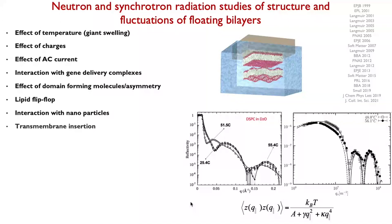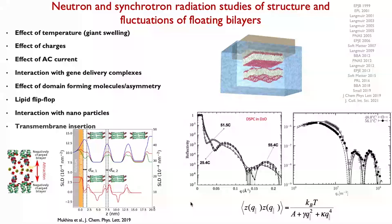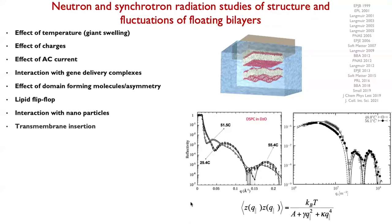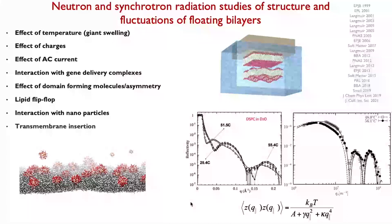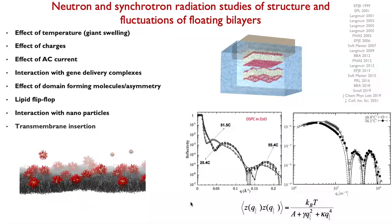We've looked at several things on these layers since 1999. Very recently, we studied the effect of charges — a nice paper from 2019 — where we determined the structure of completely negatively charged bilayers at the interface and found higher attraction of the layers to the surface compared to neutral or zwitterionic layers. We've also been looking at the effect of current, interaction with molecules like nanoparticles and gene delivery complexes, membrane asymmetry, and very recently transmembrane insertion.